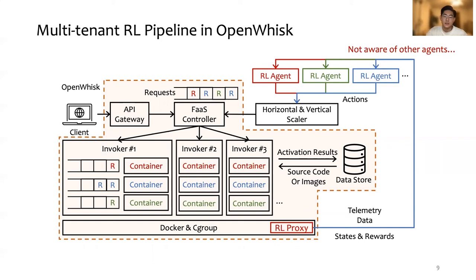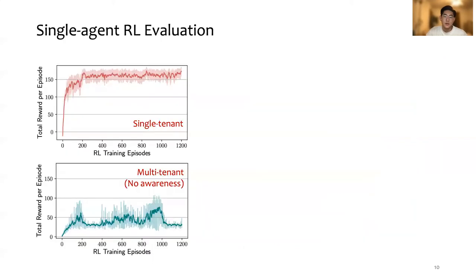The two figures show the training convergence comparison of single-agent RL in single-tenant versus multi-tenant environments. It would be expected for the single-agent RL to adapt to the stochasticity introduced by the other agents.